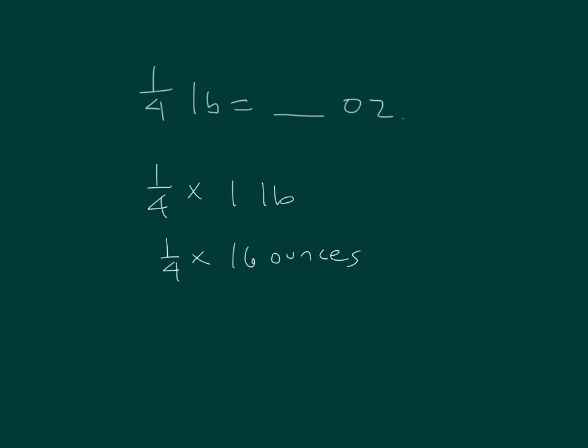We can find one quarter of 16. We just multiply one fourth times 16. It's a fraction of a set. One quarter times 16 is equal to four, four ounces. One quarter of a pound is equal to four ounces.